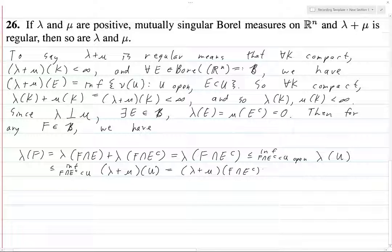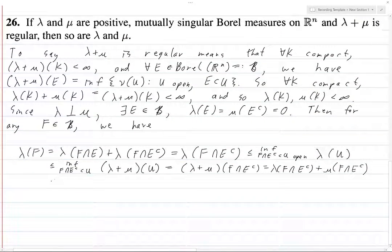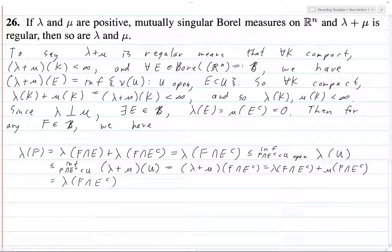But then this is equal to (λ + μ) of F ∩ E^c. Let's expand this out a little bit because I don't have enough space to finish it out. This is equal to λ of F ∩ E^c, and that's because μ of E^c is zero, so certainly this is going to be zero. But as we saw earlier, λ(F ∩ E^c) is λ(F).